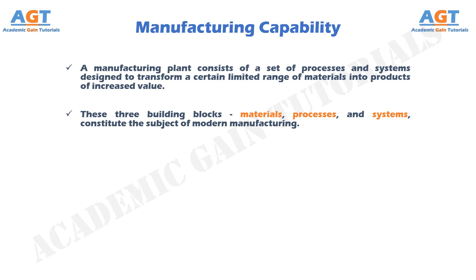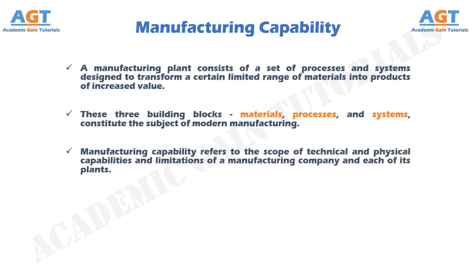A company engaged in manufacturing cannot do everything. It must do only certain things, and it must do those things well. Manufacturing capability refers to the scope of technical and physical capabilities and limitations of a manufacturing company and each of its plants.